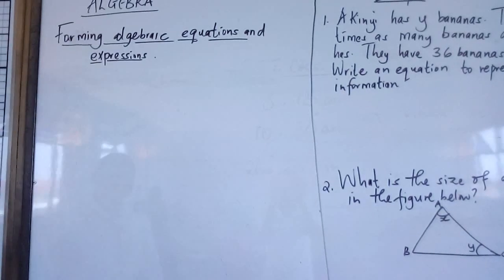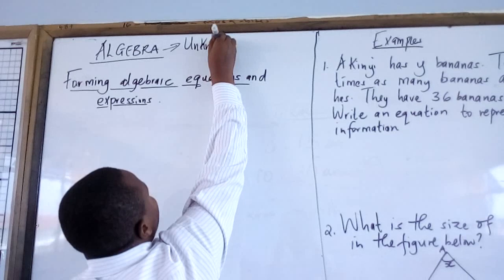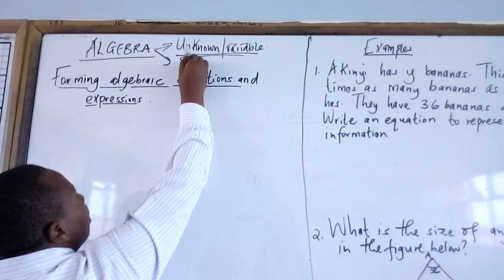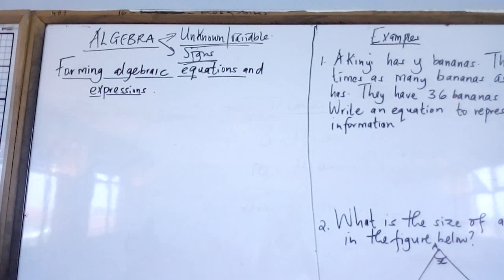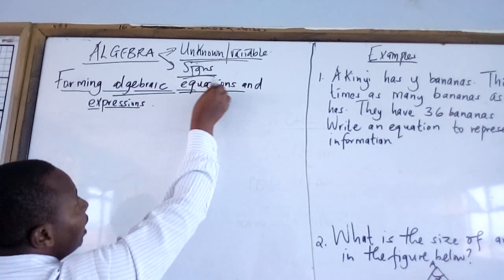First, our lesson topic is algebra. As we said in the previous lesson, algebra deals with the unknown or variant. The unknown is used to represent certain information. You must be keen on the signs — if you are not keen on signs, you will not tackle algebraic expressions and algebraic equations correctly. We have two types of algebra: algebraic equations and algebraic expressions.